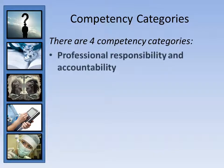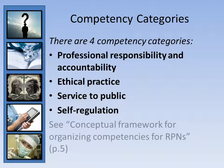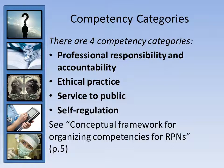There are four general competency areas: professional responsibility and accountability, ethical practice, service to the public, and self-regulation. Within these four categories are 121 specific competencies. Competencies 1 to 62 describe professional responsibility and accountability; numbers 63 to 83 state ethical practice expectations; service to the public is listed under numbers 84 to 102; and self-regulation is stated in numbers 103 to 121.